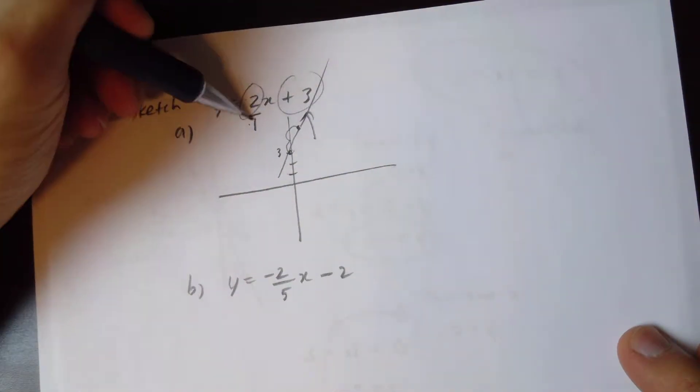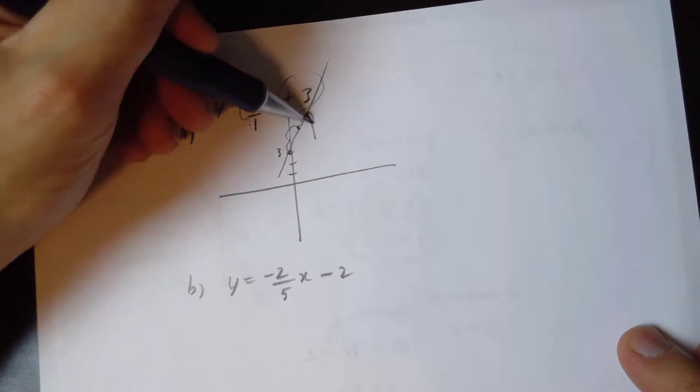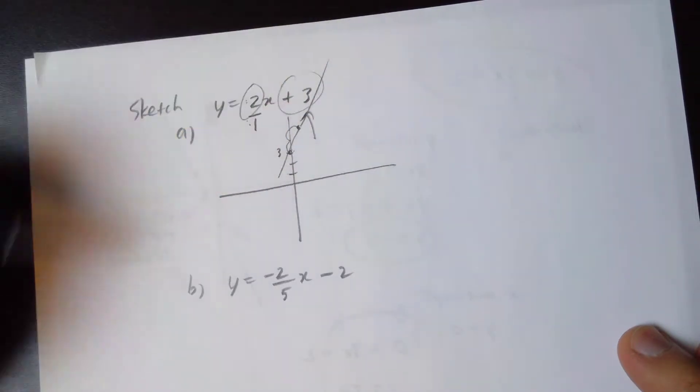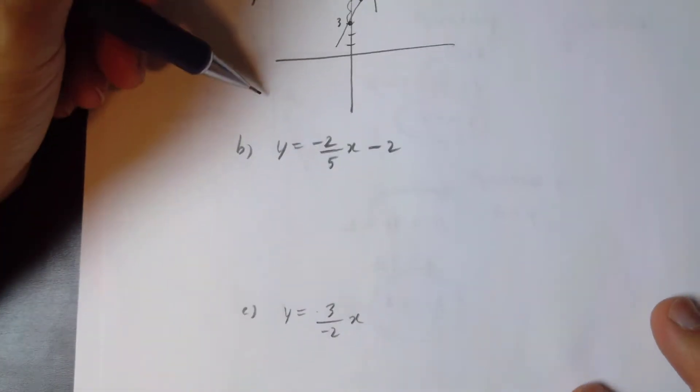So when we have rise and run, positive means you go up and to the right. If there's a negative, you go left or down. Let's sketch another line over here.